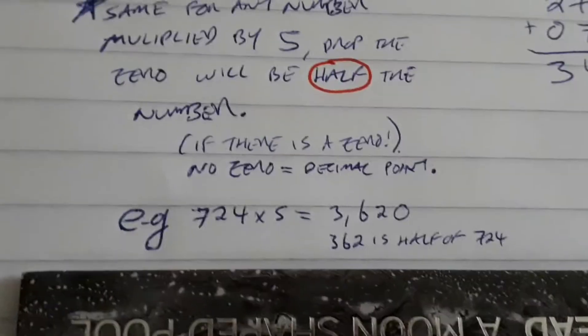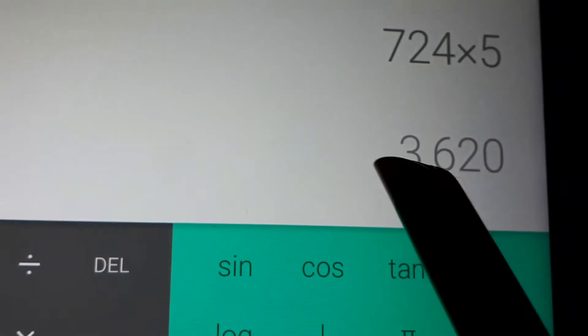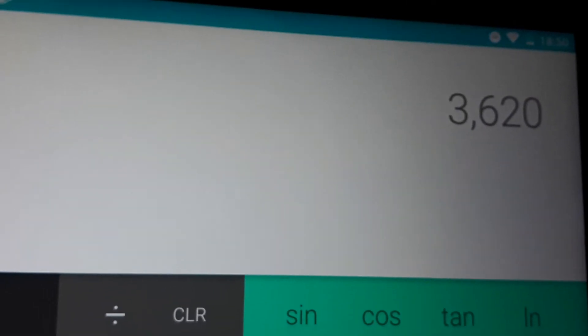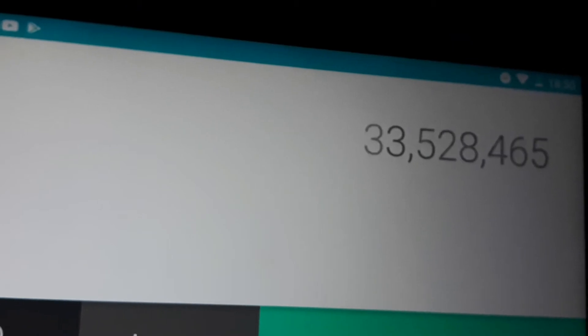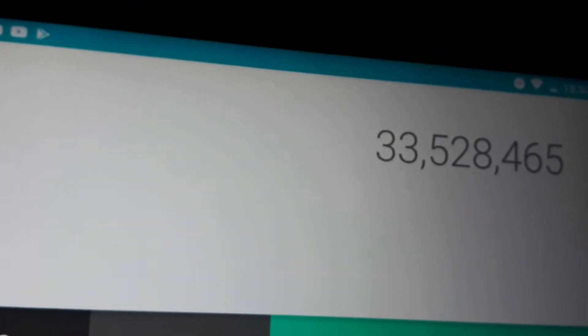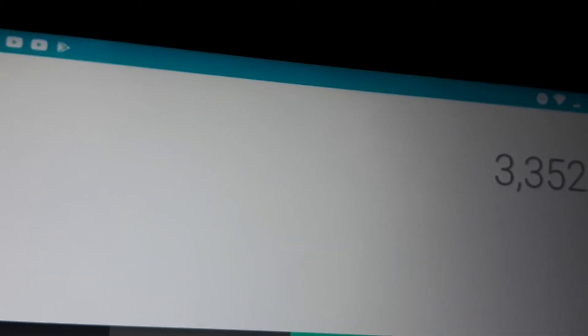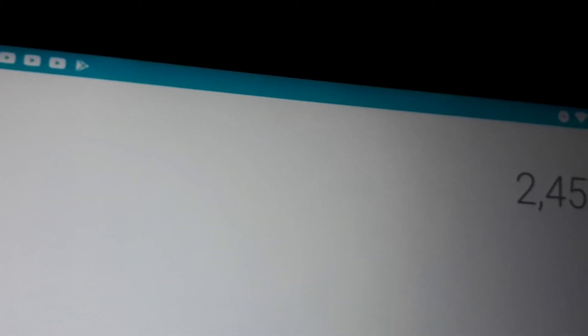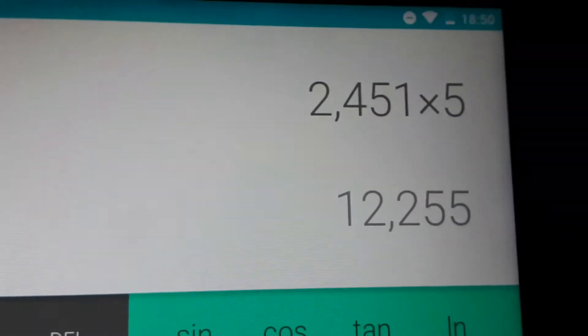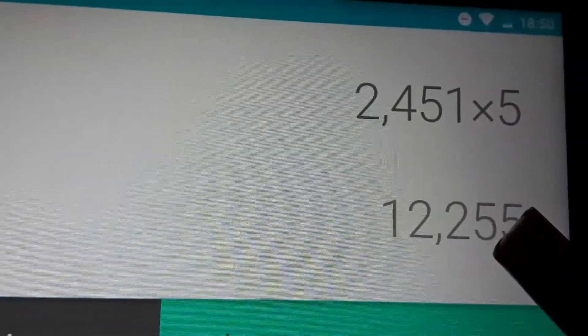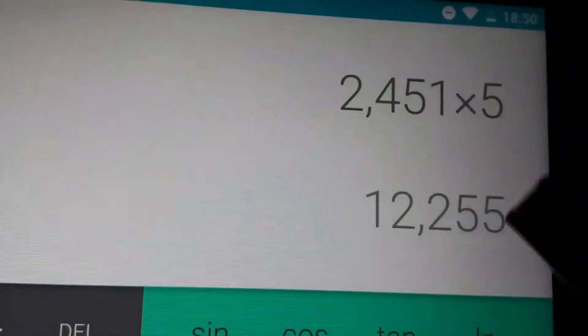I'll give an example there, of 724 times 5, 3620. There you go, so dropping the zero, you've got half of 724. Let's try and get one that's just got the 5, just random numbers. Then again, I'm not going to know what the half of it is without doing a whole thing. Let's try that times 5. Right, it's got a zero. 2451 times 5, there we go, that's not got a zero. So half of that would be 1225.5, and it does make sense when you look at it, doesn't it.